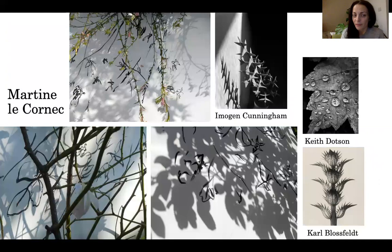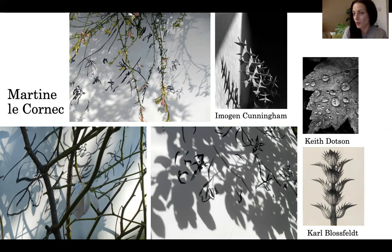Emile, I'm talking to you. This is your image sheet. You've got three examples by Martine Le Cornec, an example by Imogen Cunningham, an example by Keith Dawson and an example by Karl Blossfeld. These are all people that we've studied already. You're going to write very specifically about how they use shadow and what effect that has in their work, and you're going to do a little bit of analysis of what you see in Martine Le Cornec's work as well as our new source.